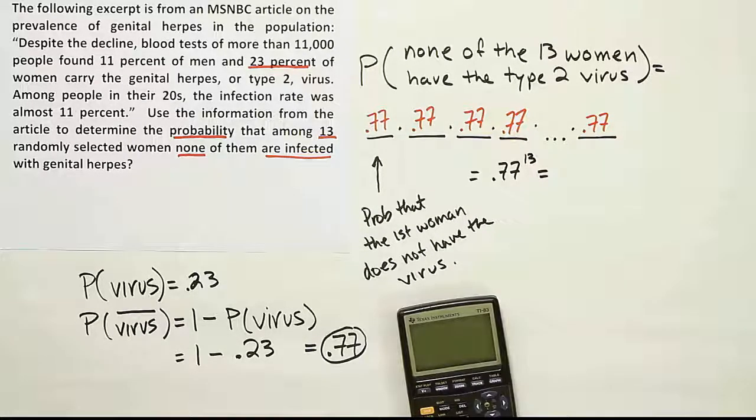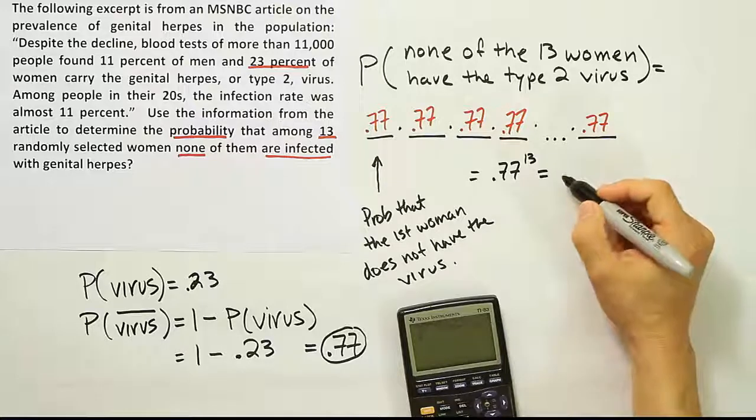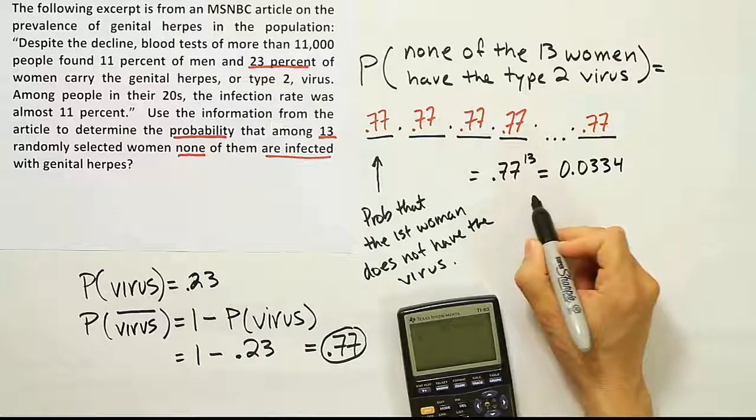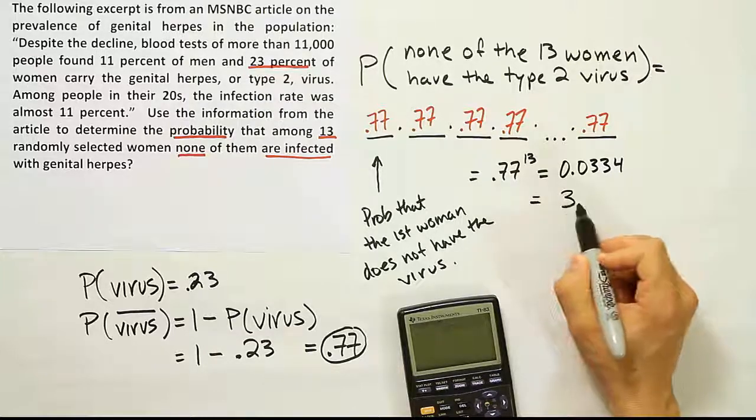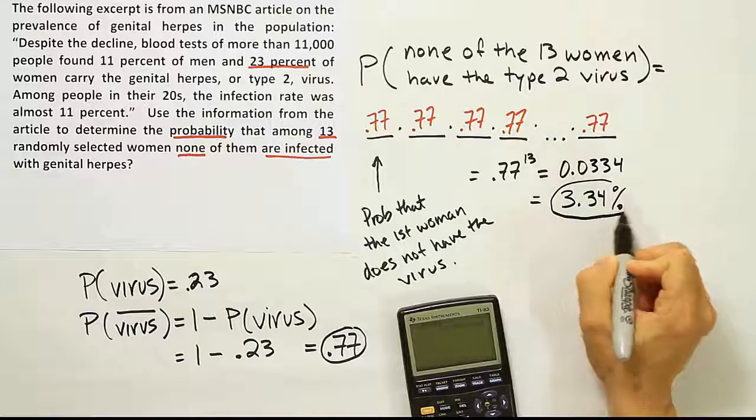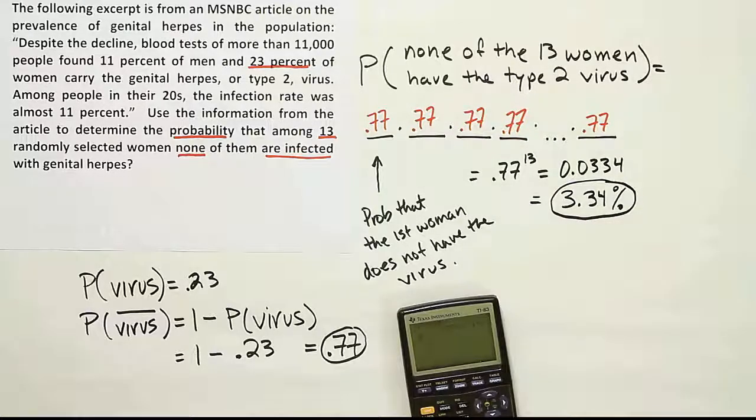So we'll end up with 0.77 raised to the 13th power, and we end up reducing the following results: 0.0334, which is basically 3.34%.